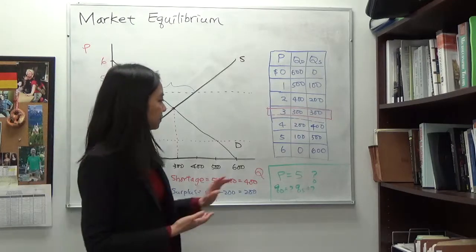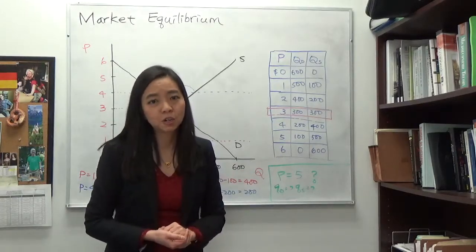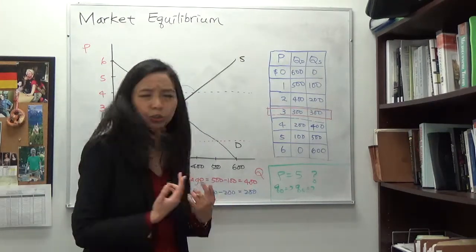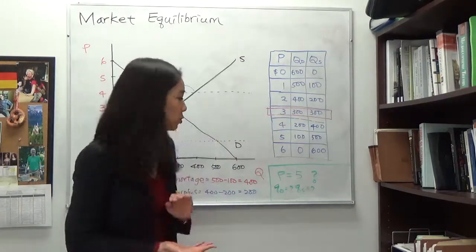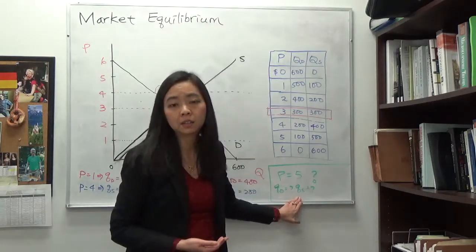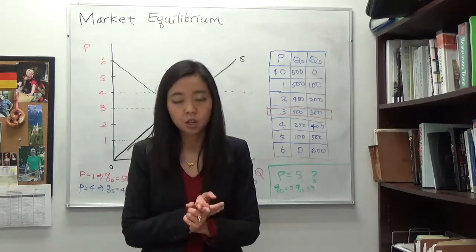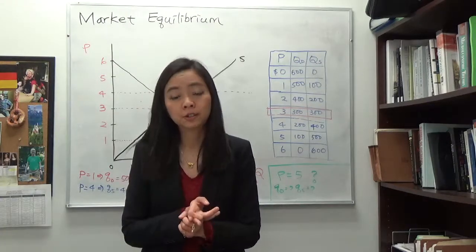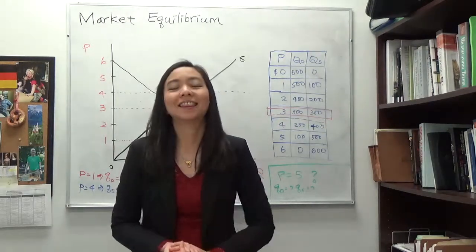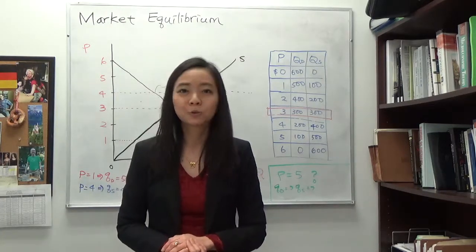I'm going to leave this as a homework. Write down in the comments what happens when your price is five dollars — do you have a surplus or a shortage, and how much? To answer, first find quantity demanded and quantity supplied when the price is five dollars, then determine whether we have a surplus or shortage and by how much. That's your homework. If you find this video helpful, please don't forget to subscribe and share this video with others who are also learning economics. Thanks for watching and I'll see you next time.